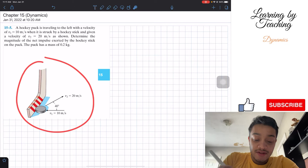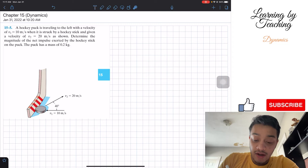They are giving us this diagram, so we have our hockey stick and the puck. As they are saying, we have an initial velocity coming to the left, and then when it is struck we are going to have a v2 velocity of 20 meters per second at an angle of 40 degrees.